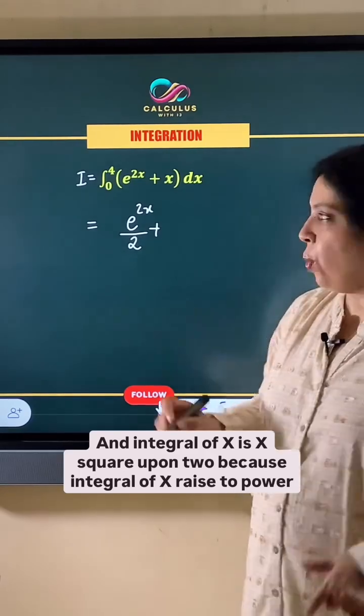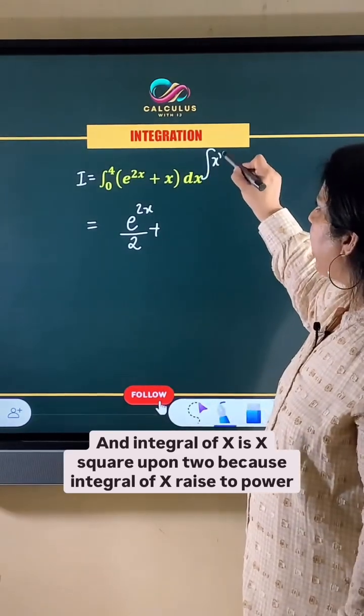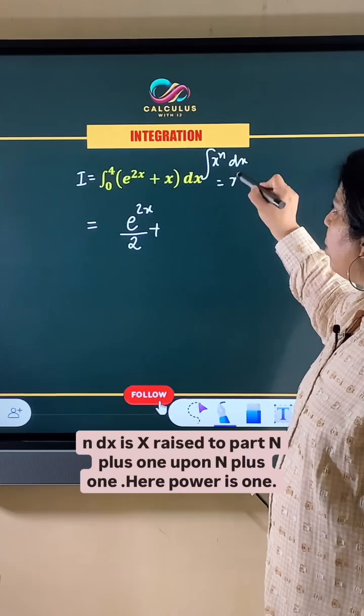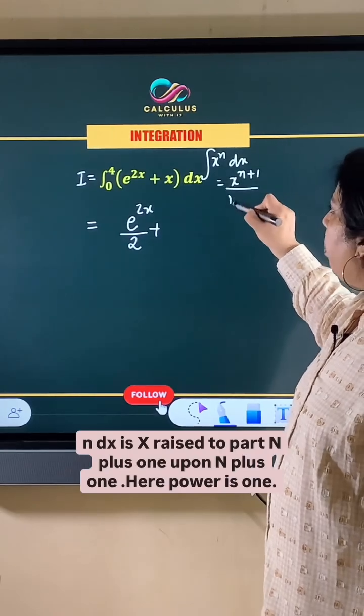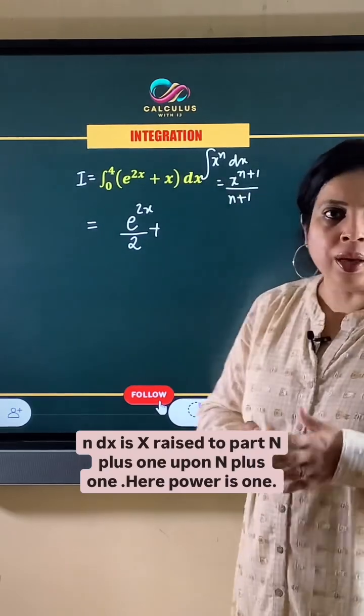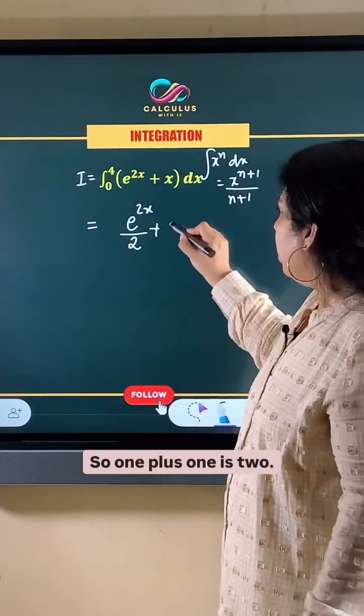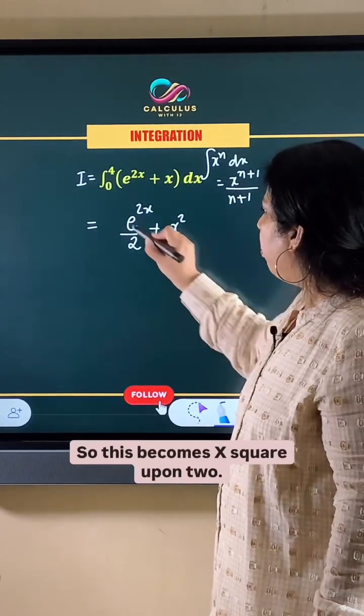And integral of x is x square upon 2, because integral of x raised to power n dx is x raised to power n plus 1 upon n plus 1. Here power is 1, so 1 plus 1 is 2. So this becomes x square upon 2.